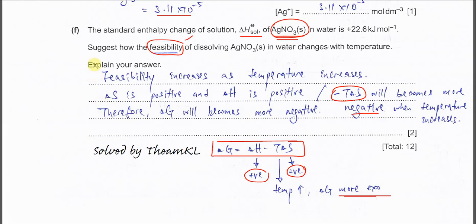So this is how you relate the feasibility with delta G, the Gibbs energy. So first you need to explain, feasibility increases as temperature increases. Why? Because the negative T delta S will become more negative when temperature increases. Means when T increases, negative T delta S will be more negative. Therefore, delta G will become more negative. That's all. Thank you.